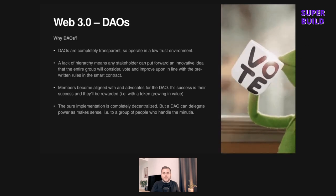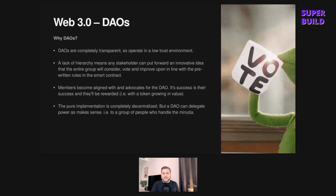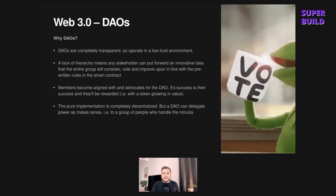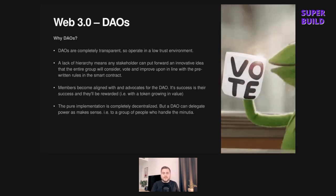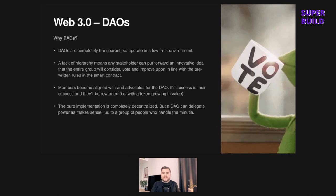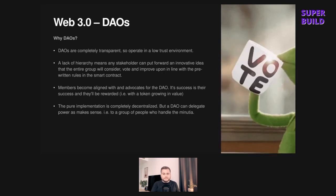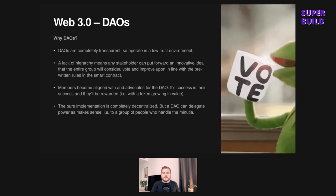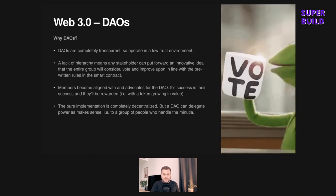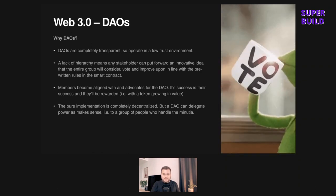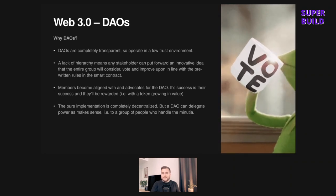A lack of hierarchy means any stakeholder can put forward an innovative idea and the entire group will consider it, improve upon it, vote it in, or reject it. Internal disputes are often easily solved through the voting system, in line with pre-written rules in the smart contract. If you're going to set up a DAO, pay a lot of attention to the smart contract, because that will either set you up for success or failure down the line.